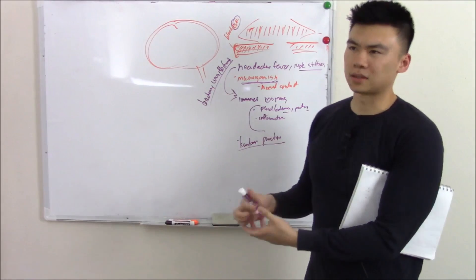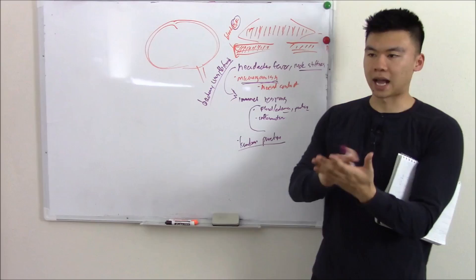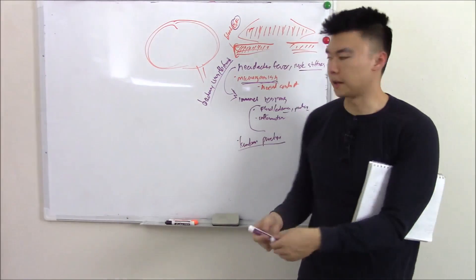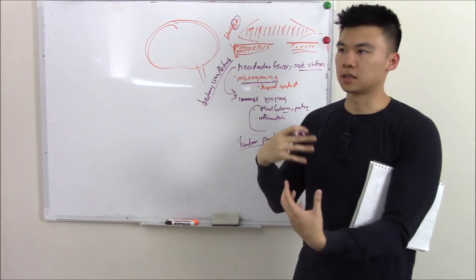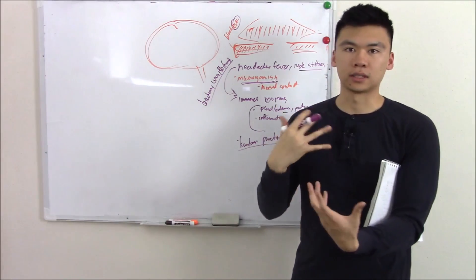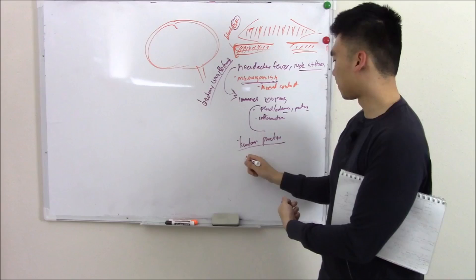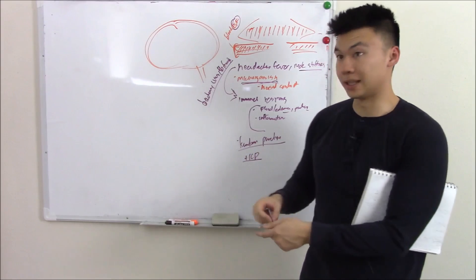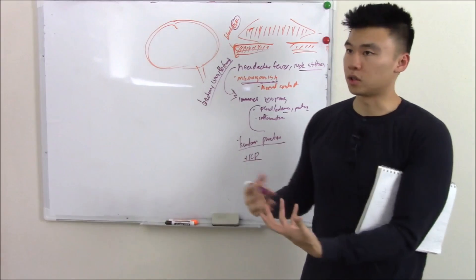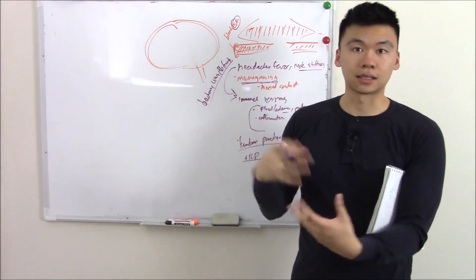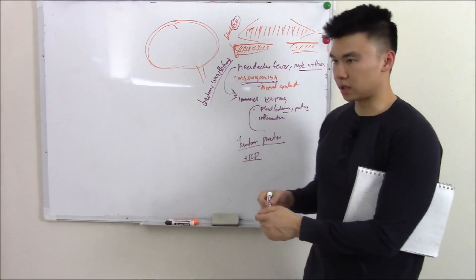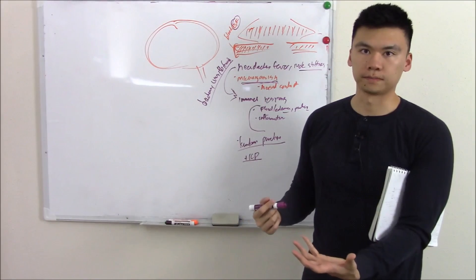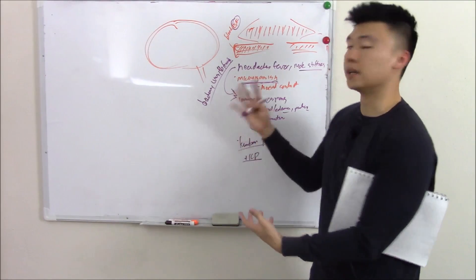Now your lumbar puncture, there's several contraindications. You don't want to do it if there's an active infection over the site. You also don't want to do it if there's signs of incredibly increased ICP, raised ICP. Normally meningitis doesn't raise your ICP that high, but it could. Or you can also have things like tumors or masses that raise your ICP. In this case you would want to do a CT just to confirm. You would just have to treat it empirically.